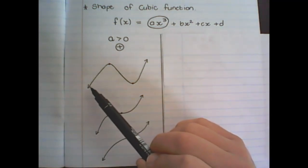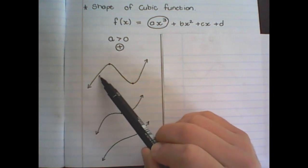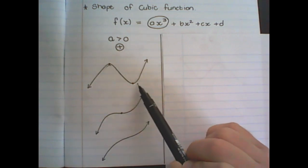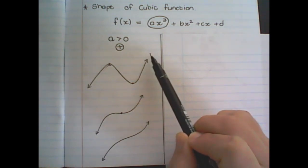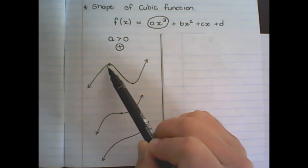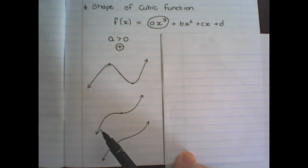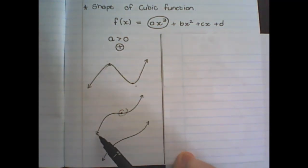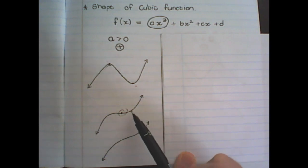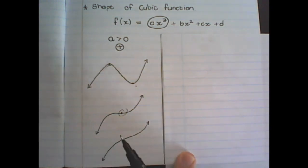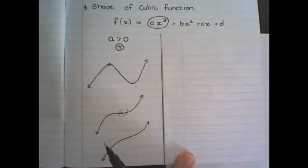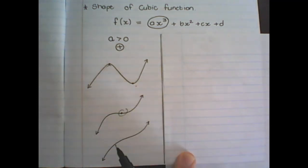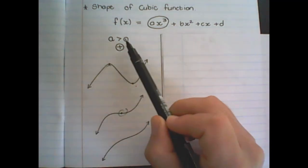The first type starts on the left, moves up, reaches a stationary point, moves down, reaches a second stationary point, and then goes up again. From left to right you first go up — that is when a is positive. The second type has only one stationary point but follows the same trend: starting from the left the graph goes up and continues to go up after the stationary point. The third type has no stationary points, but starting from the left it immediately goes up and continues upward. So all three shapes start by going up first when a is positive.